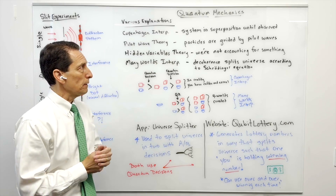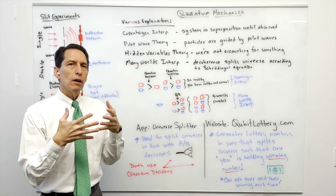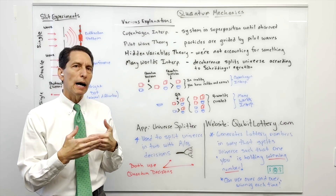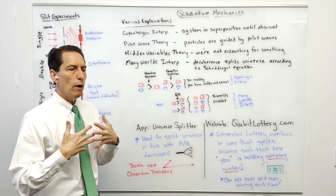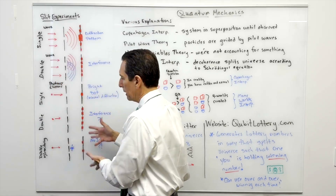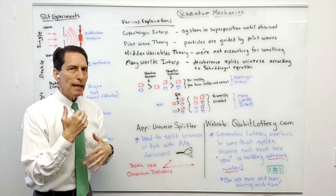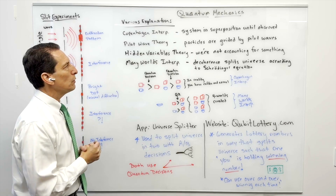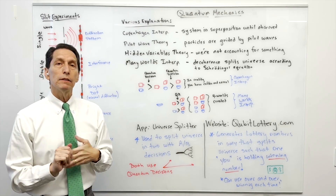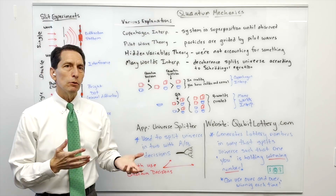Another theory is the pilot wave theory, which says that light, electrons, and even atoms are essentially particles guided by pilot waves — like a particle riding a wave. This can be used to explain what was happening in these experiments, though it didn't take off with the same enthusiasm as the Copenhagen interpretation and is still being studied.